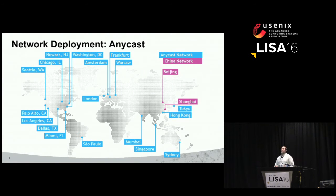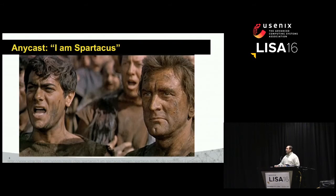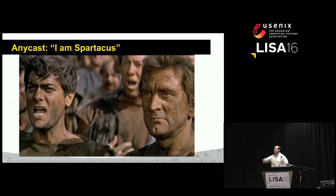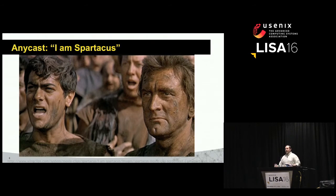The first thing to note is that Dyn's network is an Anycast network. Unicast means one thing is announcing that IP address in one place — all requests go there. Anycast is more like the world of Spartacus: 'I am Spartacus... No, I am Spartacus.' Whoever is closest to you who said that is the person who is Spartacus, and that's where your queries are going to go. Fundamentals of Anycast — this will become important later in the story.